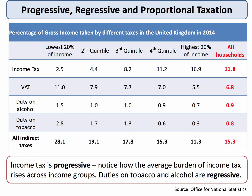If we lump together all of the indirect taxes — and there are many in the UK — we find that they took about 15% of the gross income of all households. But they affected the highest income groups less, just 11% of their income, compared to 28% of the income of the poorest 20%. So income tax is progressive, but indirect taxes by and large are regressive.